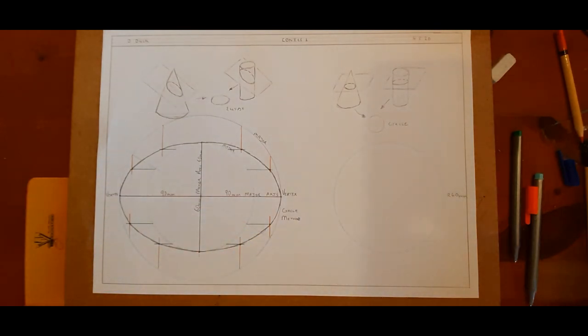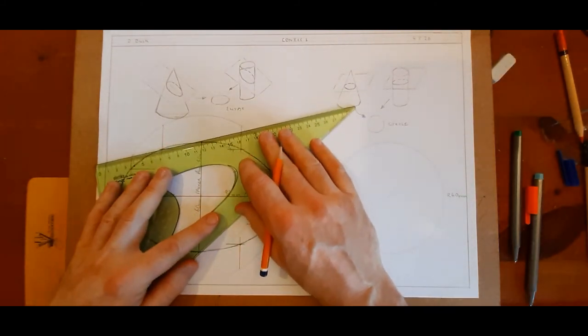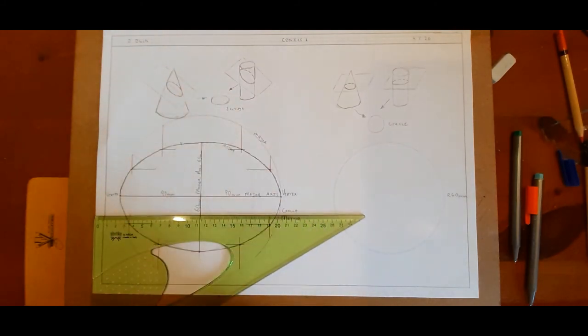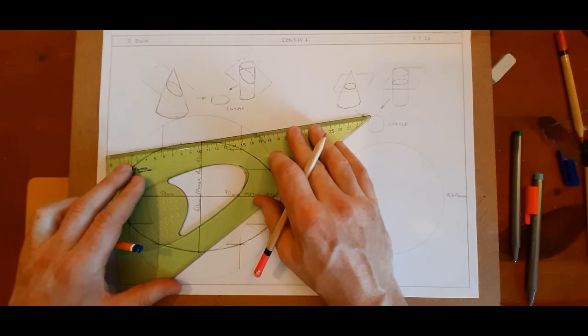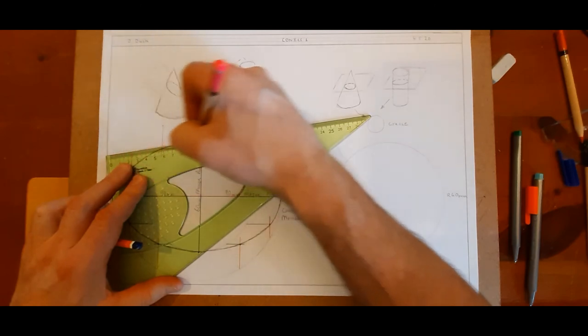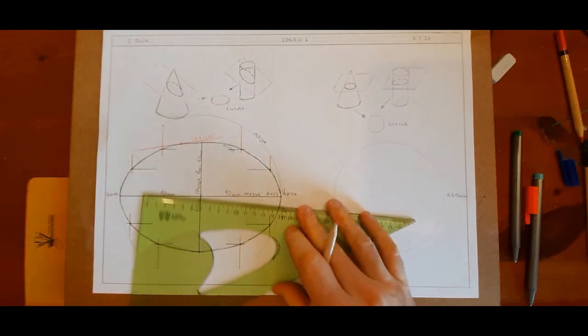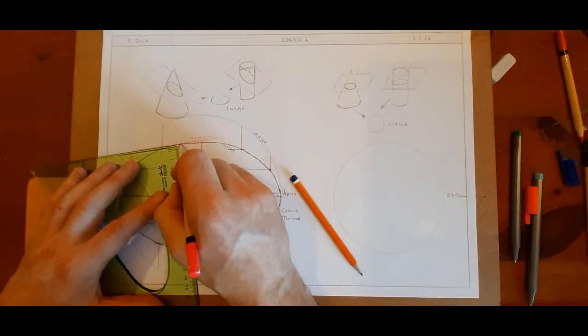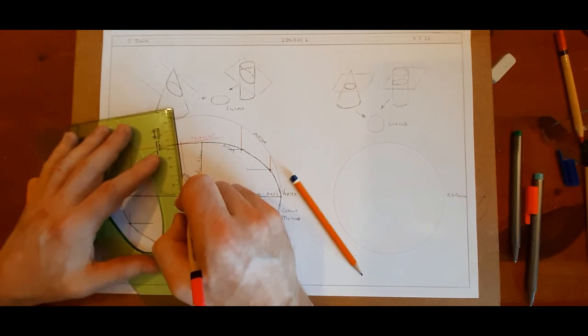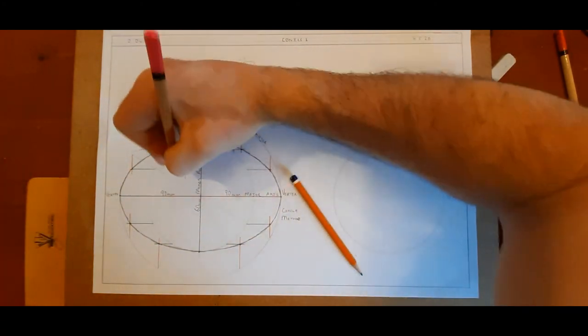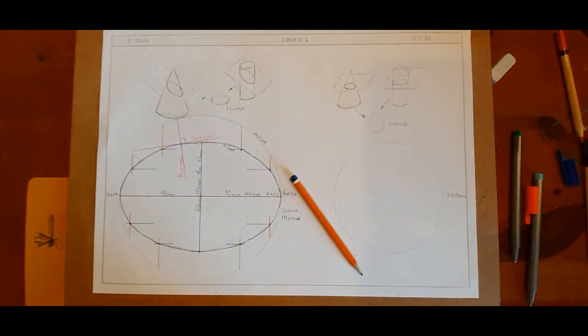Another thing we can have on an ellipse is something called a tangent. Now a tangent can be anywhere. So pick a point anywhere. We're just going to draw it in roughly for today. I'm going to show you exactly how to draw them in in later tutorials. That will be a tangent. And there's another line that often comes along with tangents, and it's called a normal. Now a normal is always at a right angle to a tangent. So we have tangent, a normal, minor axis, major axis, major circle, minor circle, and the vertex is there.